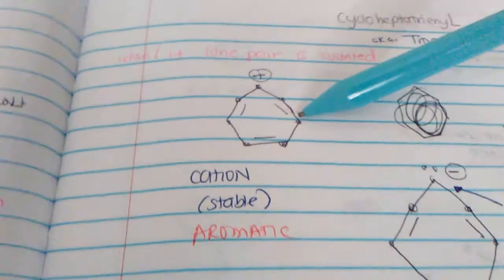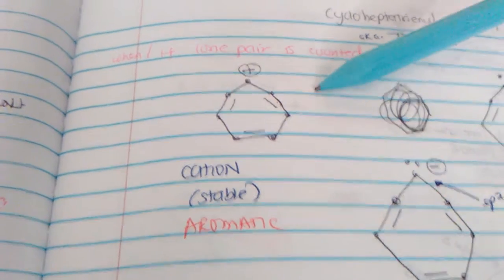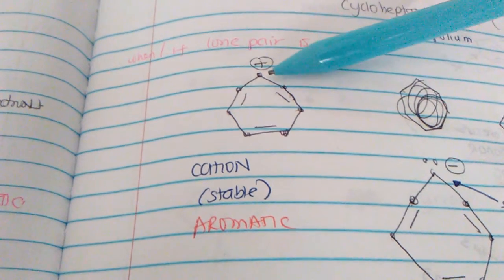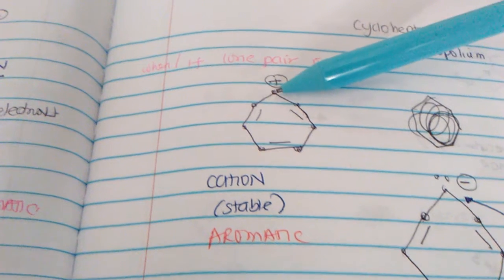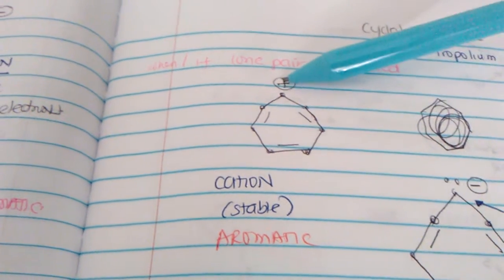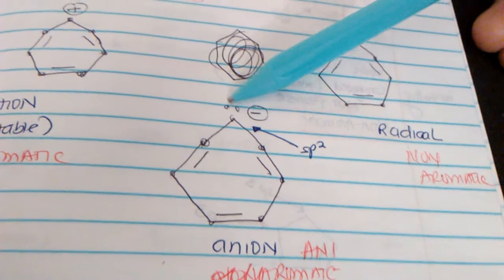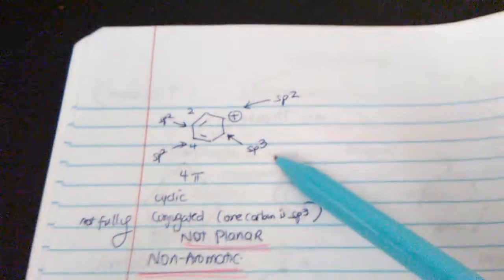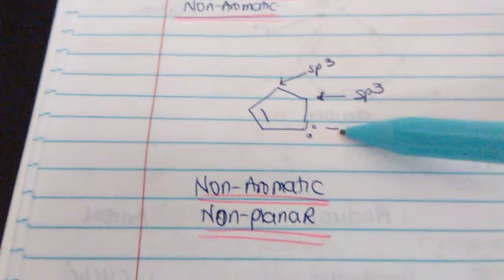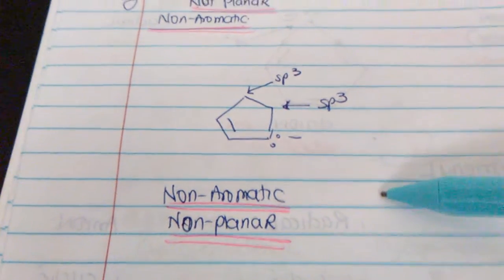More examples showing when a lone pair is counted. With a positive charge on the ring, first verify nothing is sp3-hybridized — the positive charge confirms sp2. Counting gives 6 electrons — aromatic. A related structure with a lone pair has 8 electrons — anti-aromatic. One with a radical is non-aromatic. A bicyclic structure with a positive charge has sp2 at that position but sp3 elsewhere, making it non-aromatic.